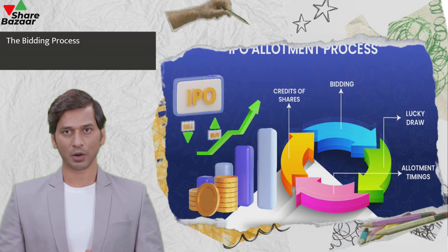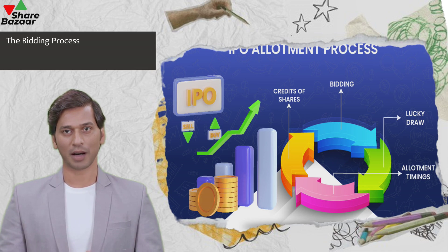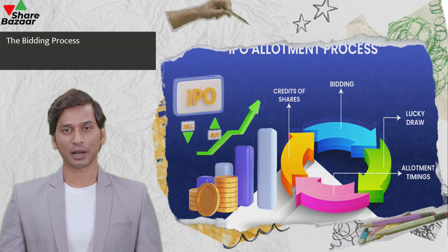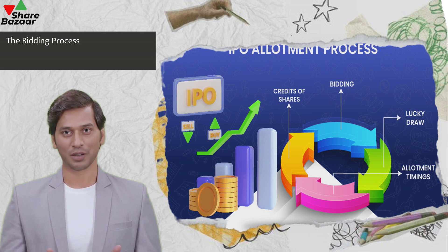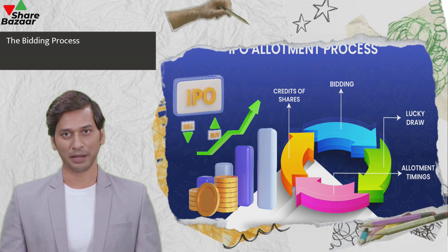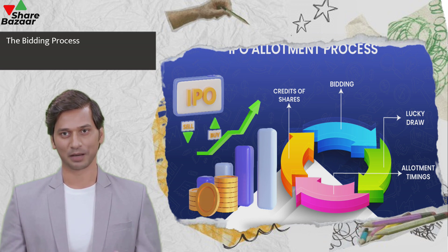Retail investors can bid on IPOs by following the lot size, which specifies the minimum number of shares to subscribe. The maximum for retail investors is ₹2 lakh. Bidding can be done online through Demat and trading accounts, or offline by visiting a broking firm's office. Retail investors can bid at the cut-off price, which increases their chances of getting shares, especially in oversubscribed offers.